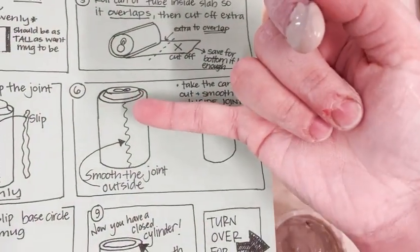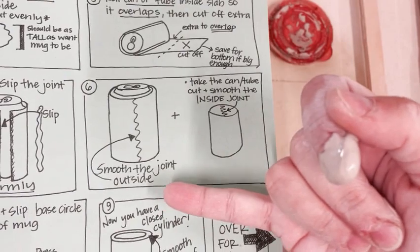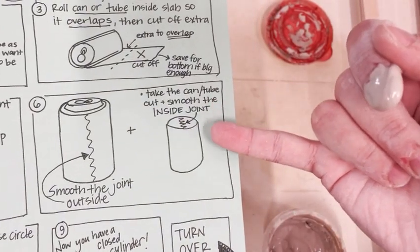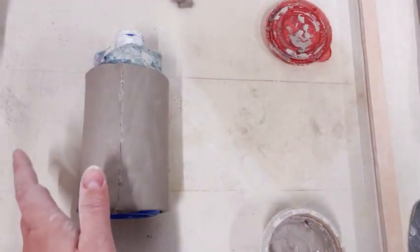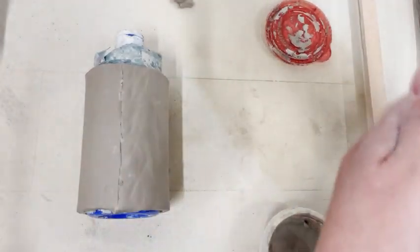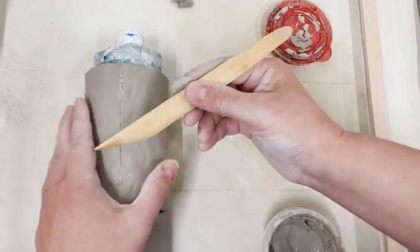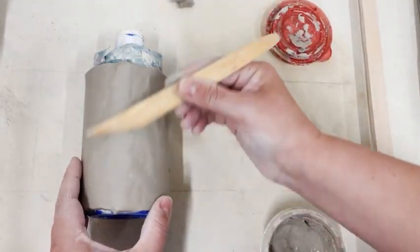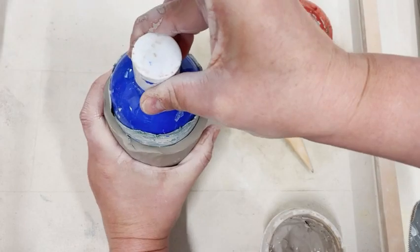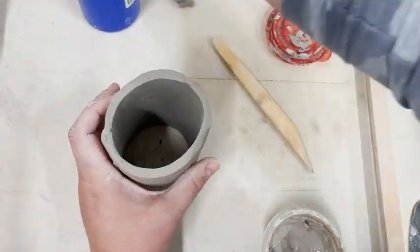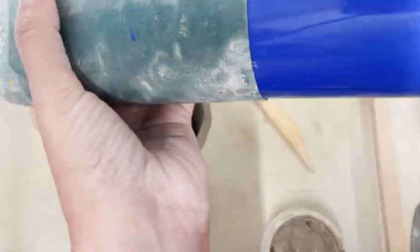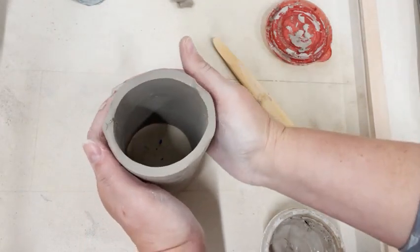Step six is to smooth the outside of the joint and then take the can and tube out and smooth the inside joint. So I'm going to use a plastic modeling tool or a wood modeling tool for this and just run it along that joint up and down. A little bit of water if I need it. Take the tube out. Try to put it back together so someone else can use it.